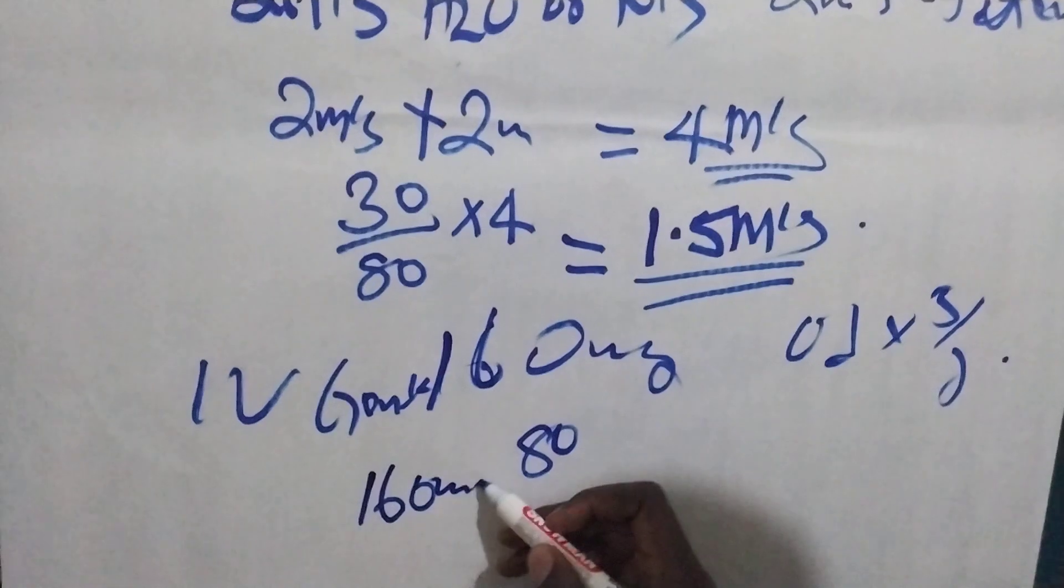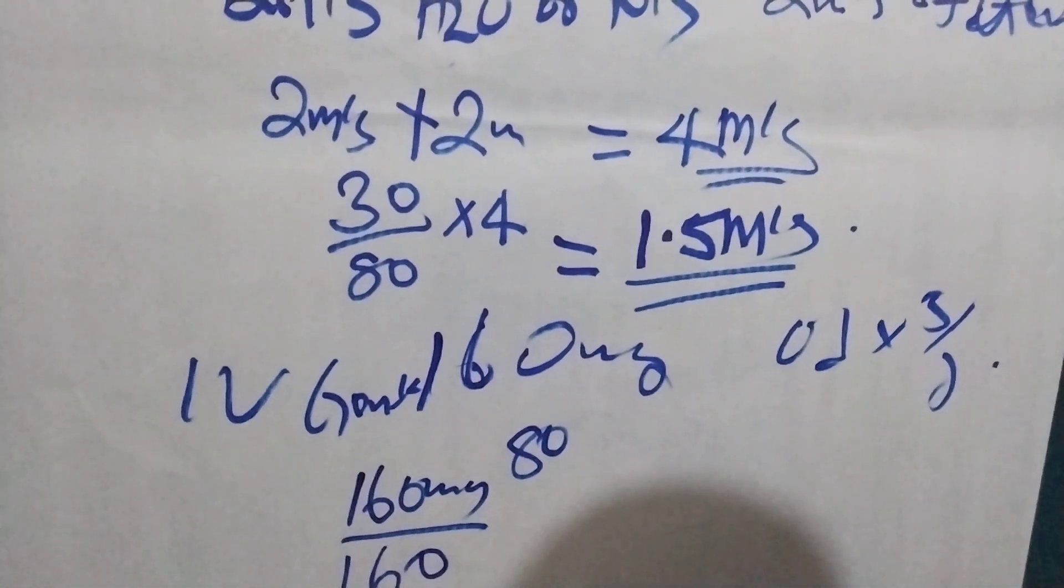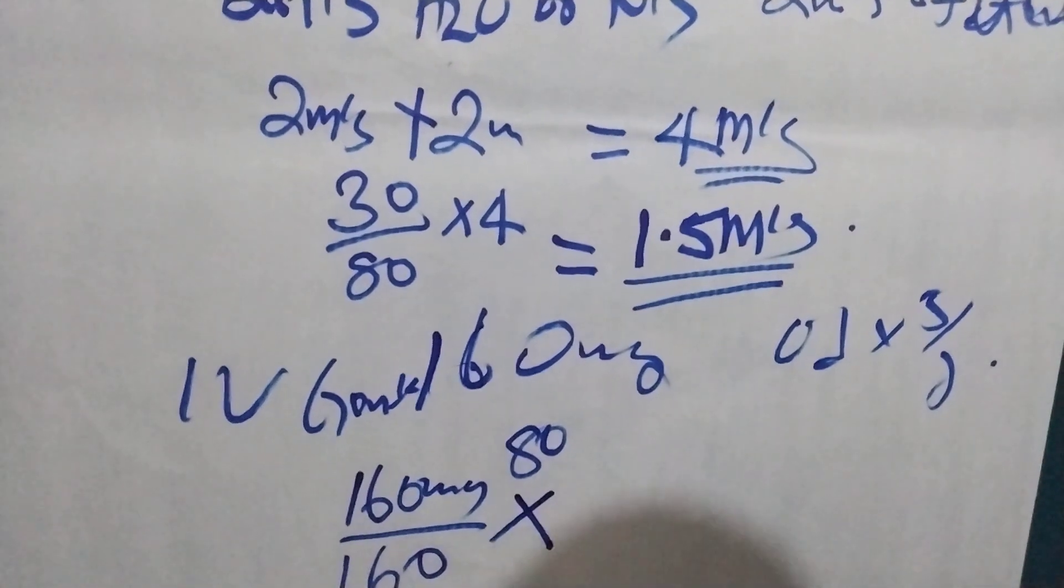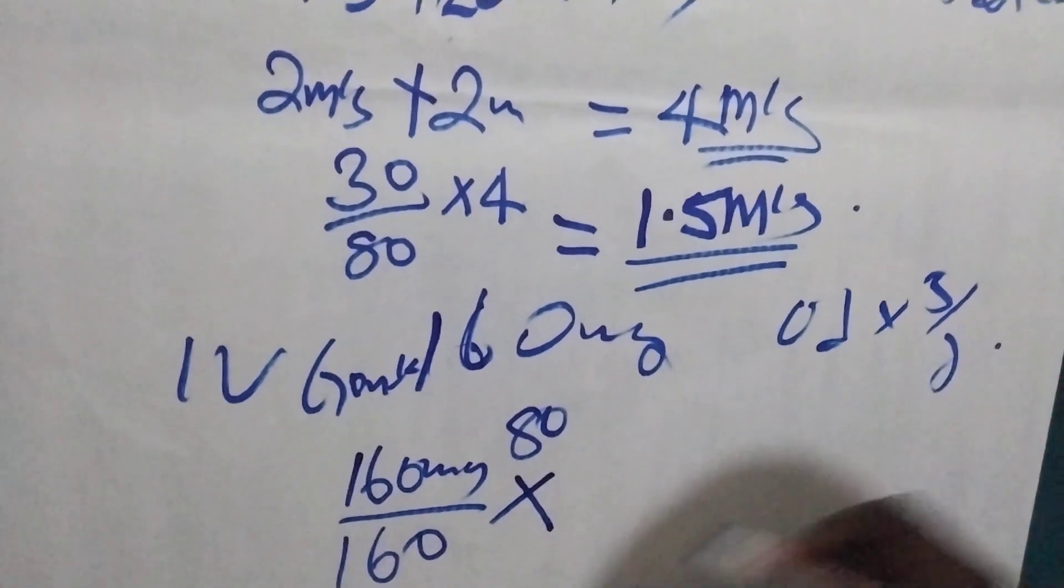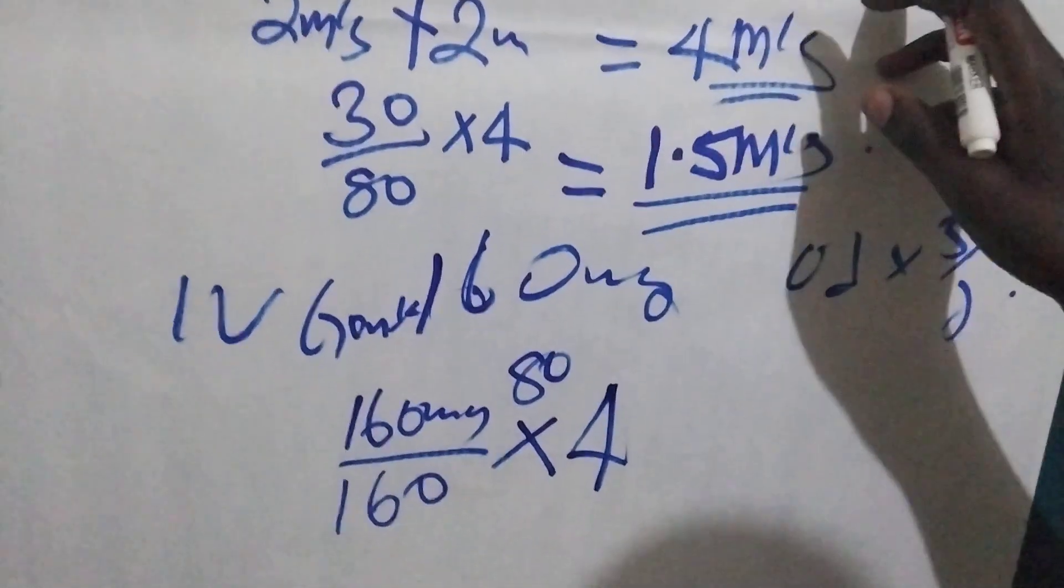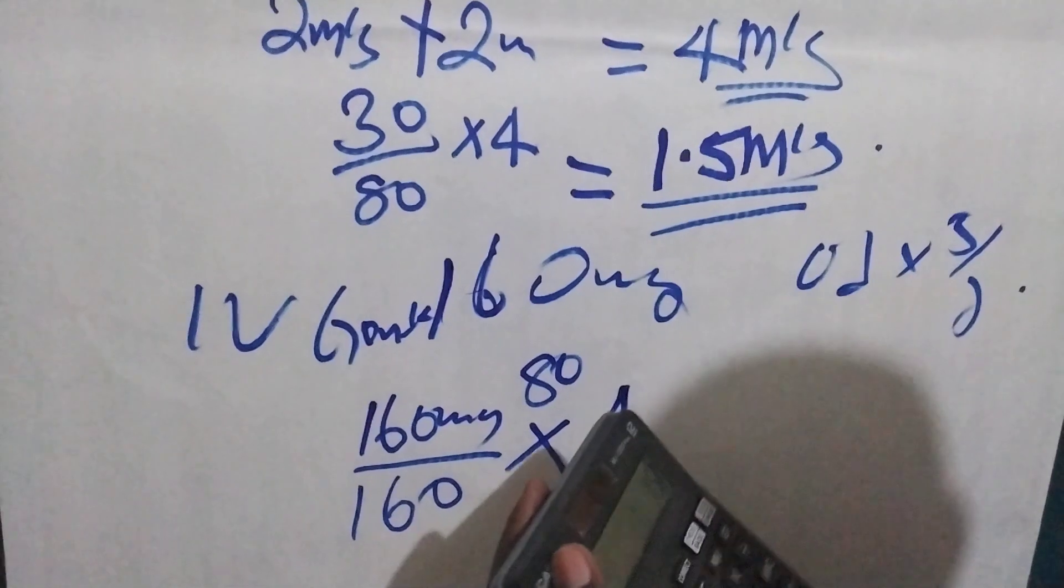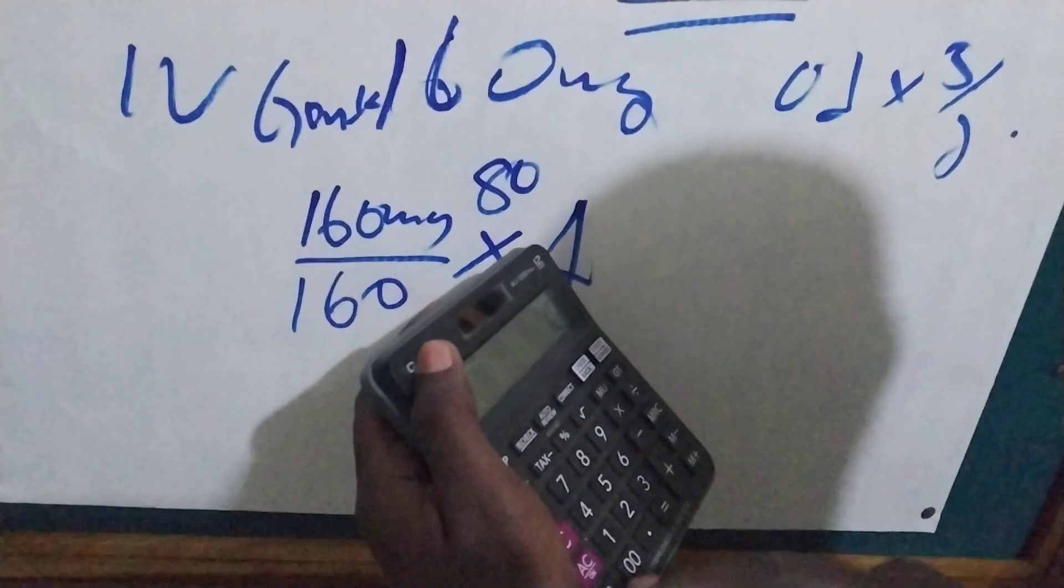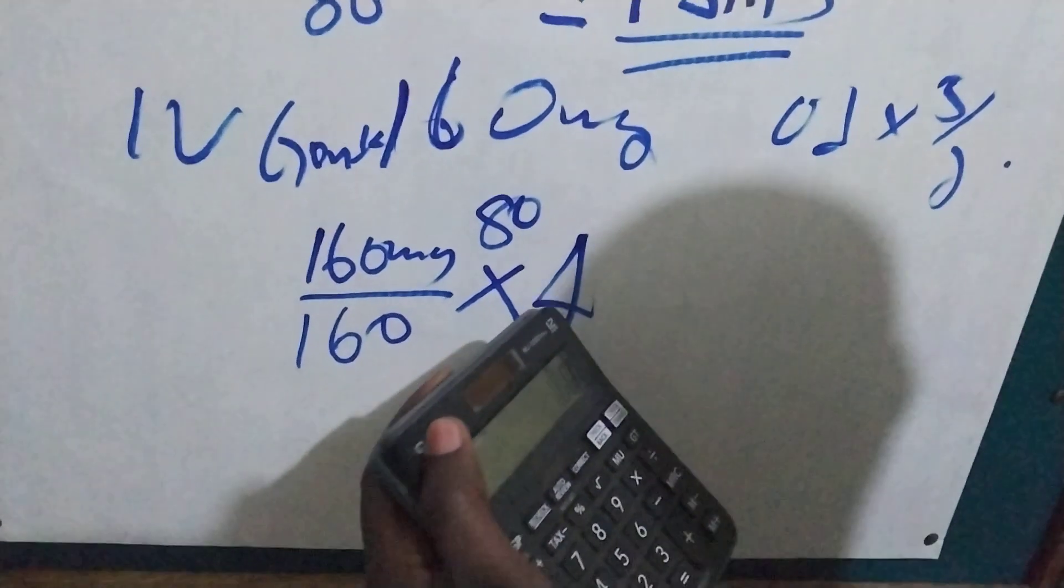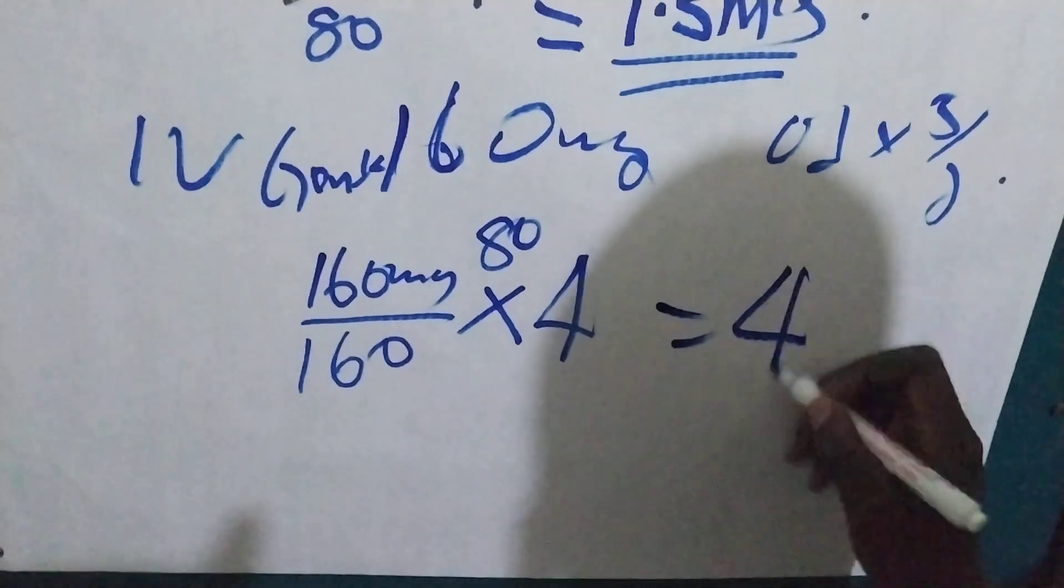then we are going to multiply by 4, because each ampoule is 2mLs, so this one will become 4. So let's see what we are going to get: 160 divided by 160, that is 1 times 4, so we are going to get 4mLs and give to the person.